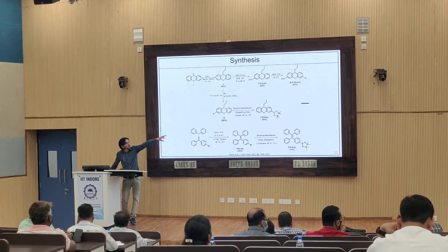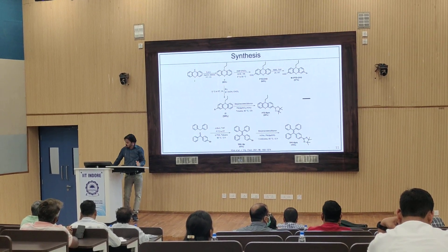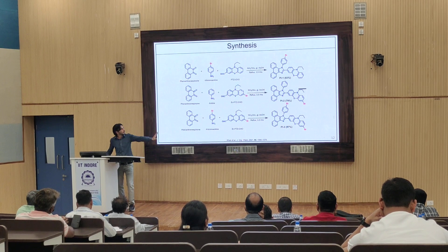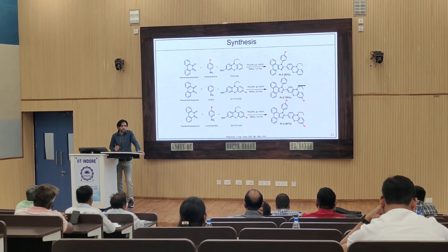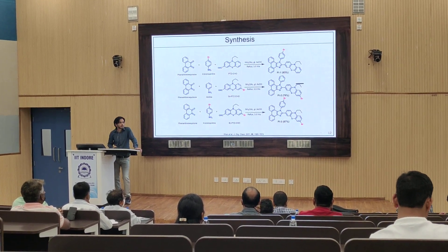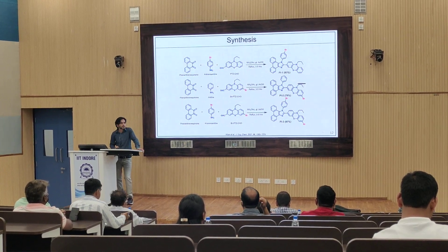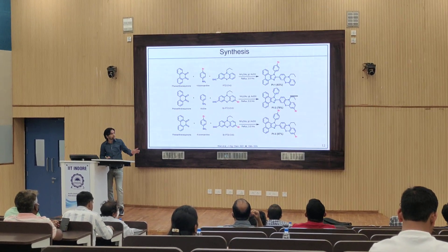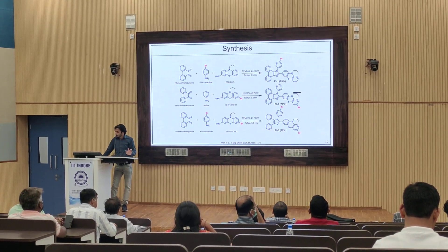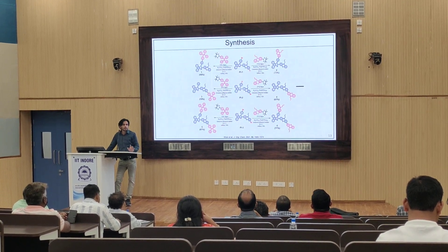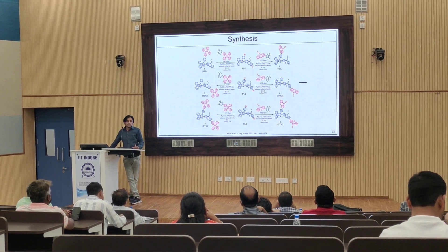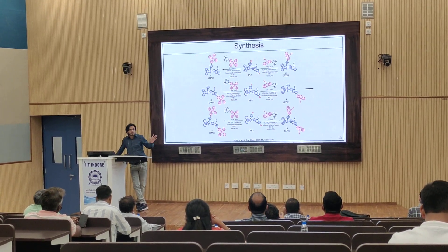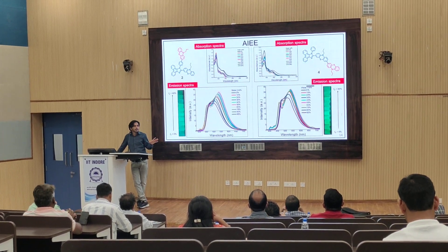Using intermediates PTZ-CHO and Bi-PTZ-CHO, the phenanthrimidazole core was synthesized. Three intermediates PI-1, PI-2, and PI-3 were prepared — all using the same route but with different positions of the bromo group. These intermediates were synthesized by a condensation reaction of phenanthroquinone with different amines and phenanthroquinone derivatives in ammonium acetate. Finally, cross-coupling between the phenanthrimidazole derivatives with TPE and PTZ-diphenyl was done using potassium carbonate as base in a toluene-water solvent system, affording compounds 1 to 6.